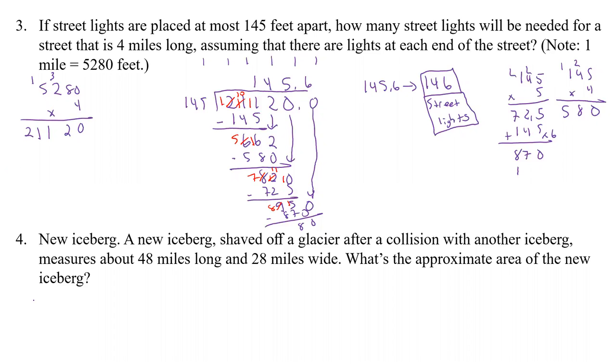What about the next one? It says new iceberg. So there's a new iceberg. It shaved off a glacier after a collision with another iceberg. It measures 48 miles long and 28 miles wide. What's the approximate area of the new iceberg? Well, it looks like it's going to be some kind of a rectangle and it's going to be 48 miles long and 28 miles wide. So what does that mean? Well, it means we're going to take 48 times 28.